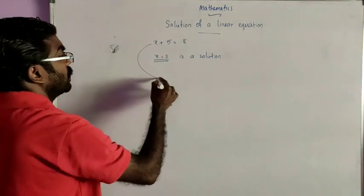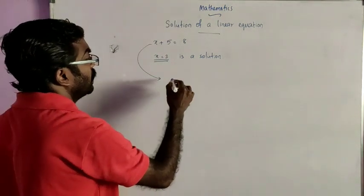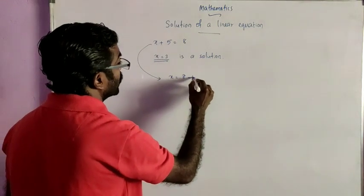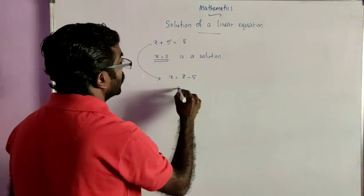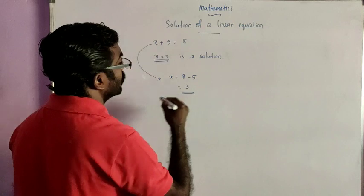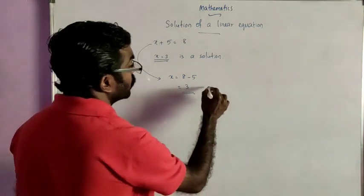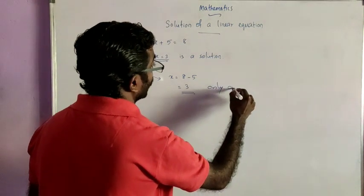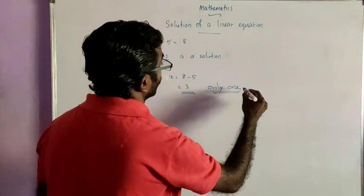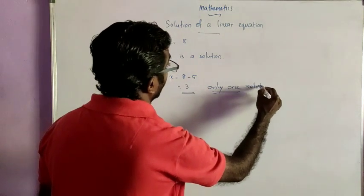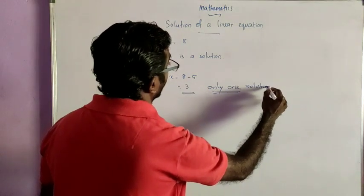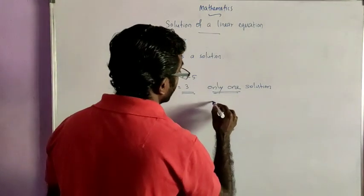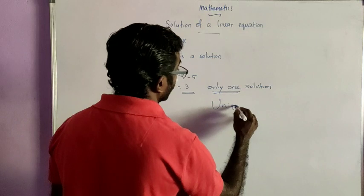For solving this equation: x plus 5 is equal to 8 implies x is equal to 8 minus 5, which gives 3. So 3 is the only solution of this linear equation. Therefore, a linear equation in one variable has only one solution — a unique solution.